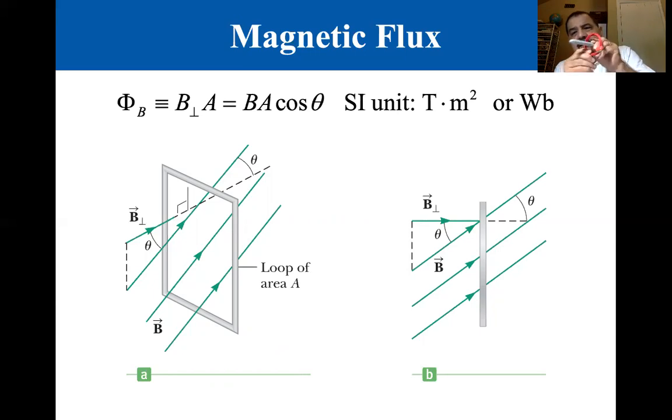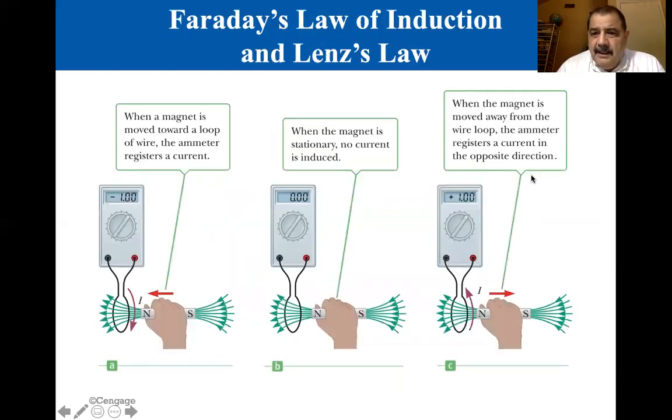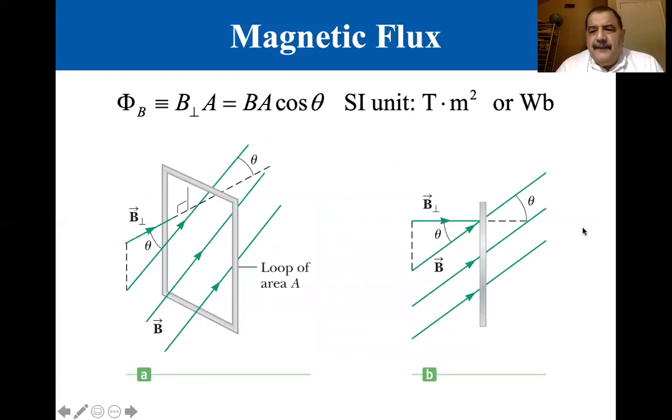This little marker here is showing you the normal to this little coil of wire that I'm showing you. That's where we get our theta from. So the theta is the angle between the magnetic flux, the B field and the normal to the coil. So the magnetic flux is the magnetic field times the area times cosine theta. And the units are Tesla meter squared or Webers.